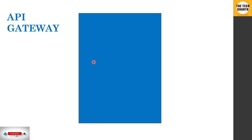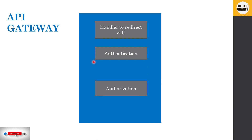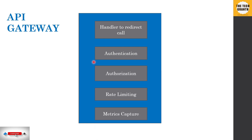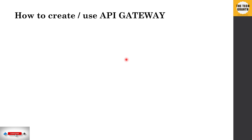An API gateway incorporates a request handler for redirecting calls, along with authentication, authorization, rate limiting, and metrics capture — all coded in one place. These features no longer need to be duplicated across each individual service. Instead of putting all these things in eight or nine services, we abstract them out and place them in one central location.